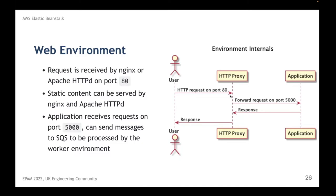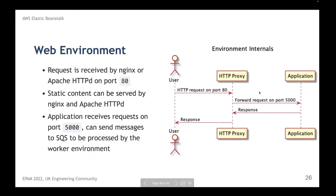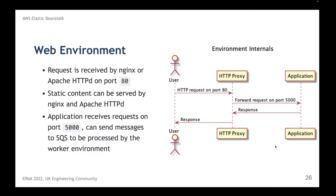Let's look at some details of the web environment. In the web environment, it is expected that your application exposes port 5000. You remember the default Java port is 8080, but for Beanstalk it is port 5000, because in front of your application there is an HTTP proxy — ordinarily nginx, but it can also be Apache httpd. It receives all requests from end users on port 80 and forwards them to your application. This allows you to run multiple applications, with the HTTP proxy load-balancing across them.